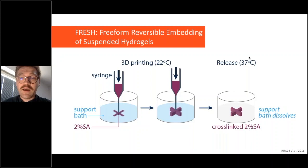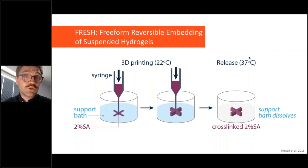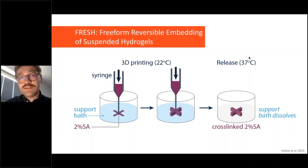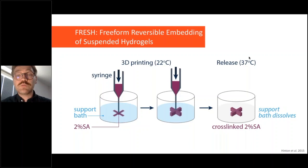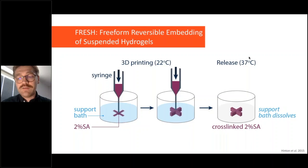Another technique is FRESH — Freeform Reversible Embedding of Suspended Hydrogels. FRESH involves printing a gel within a gel: the target gel, such as sodium alginate or collagen, has low viscosity and is difficult to pattern on its own. Using a support bath made of gelatin microparticles provides physical support for the construct being printed and can also supply cross-linking agents — for example, calcium chloride for sodium alginate. After printing, heating to 37°C dissolves the gelatin and releases the bioprinted construct.